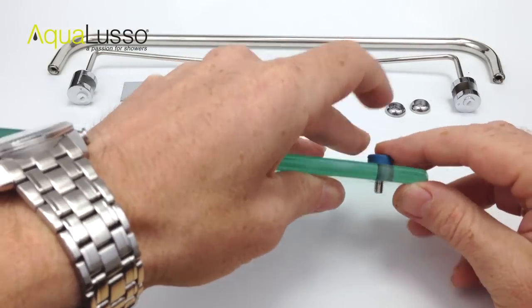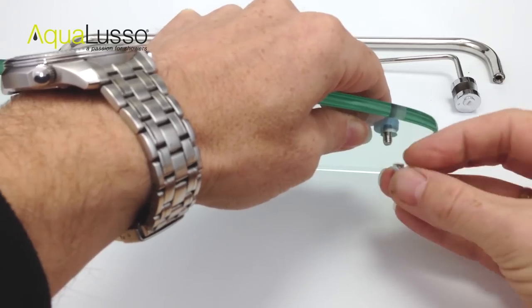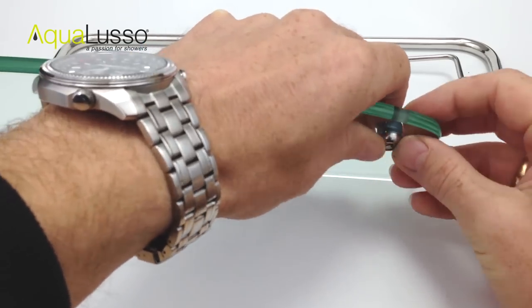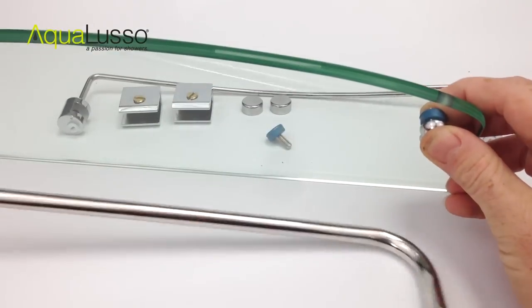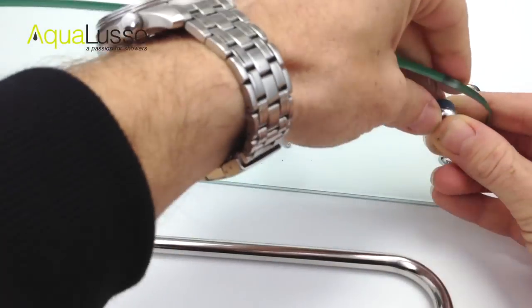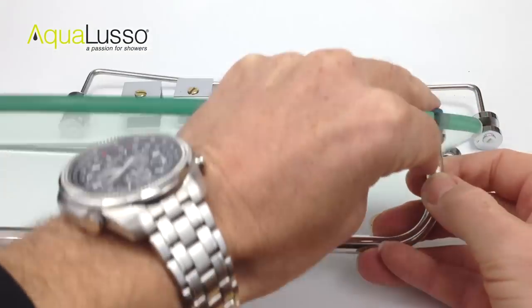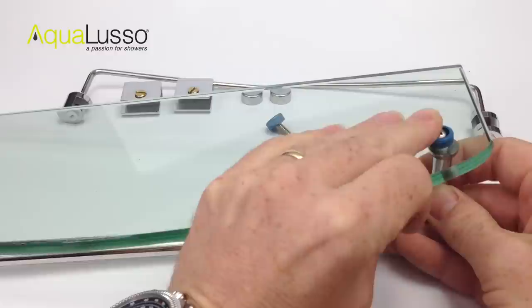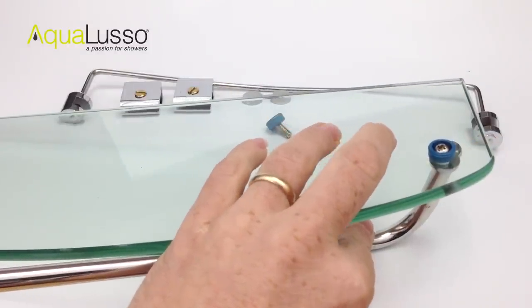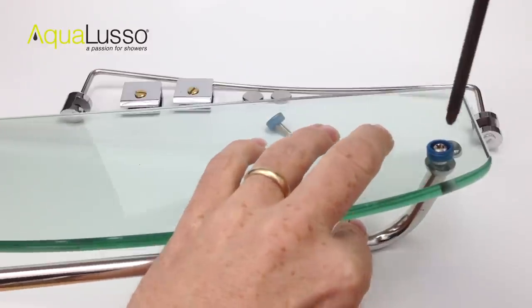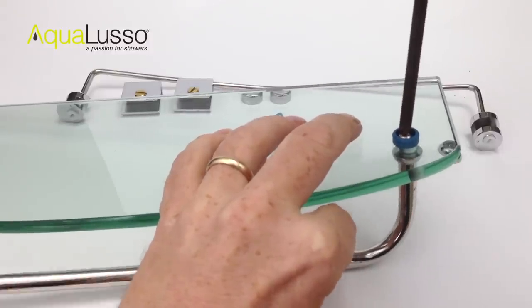Now on one of the holes position the bolt through the hole and then place one of the silver grommets in position. This forms the underside rail so we need the thicker rail. And that then sits into the grommet. And we simply screw the pieces together.